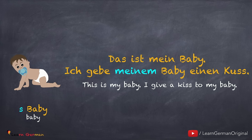Das ist mein Baby. Ich gebe meinem Baby einen Kuss. Since the article of 'Baby' is 'das' and it's an indirect object, it changes to 'meinem Baby' in dative. You can notice that these articles are very similar to unbestimmte Artikel, which are 'einem', 'einer', etc. in dative.